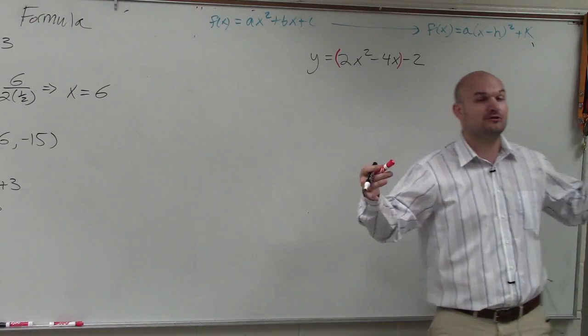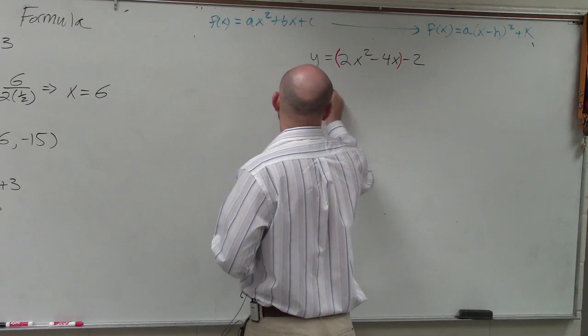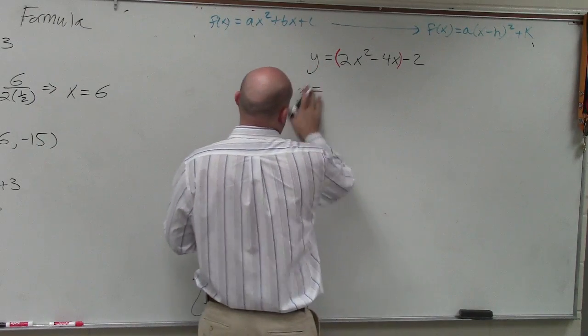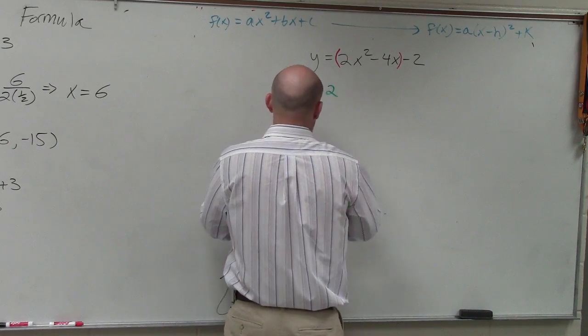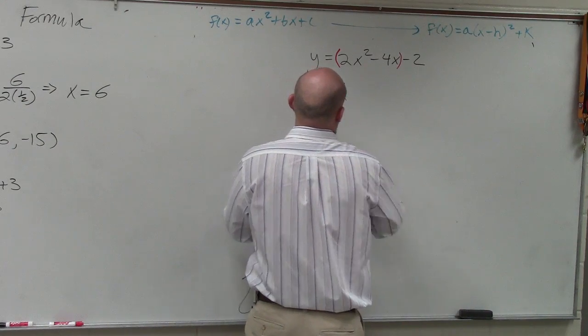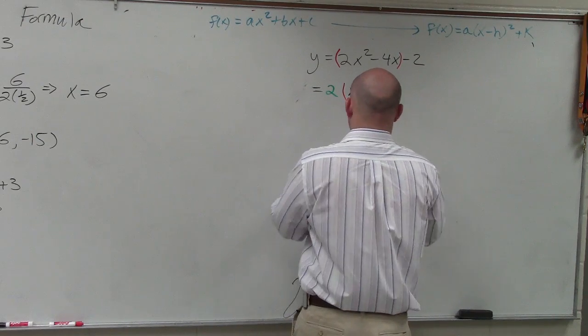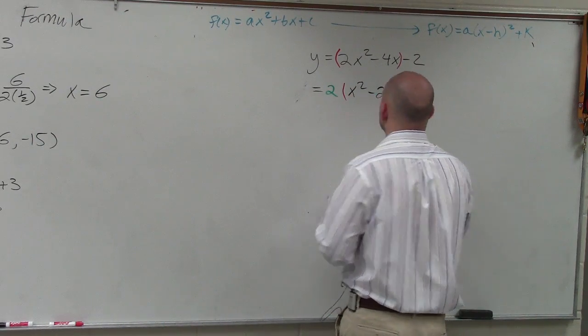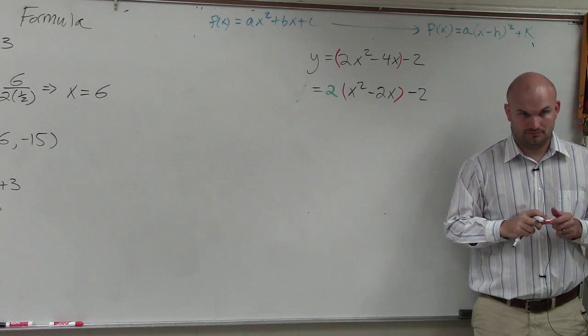Remember, only factoring so a is equal to 1. We don't need to factor out the x. So I factor out the 2. When factoring out the 2, I'm now left with 2 times x squared minus 2x minus 2. Does everybody see what I did?